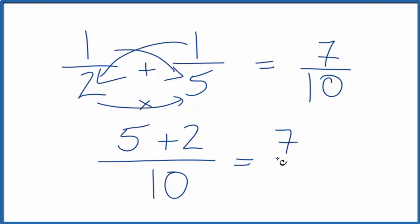Five plus two, that's seven over ten, and we get the same answer. So we did the first part correctly. This is the correct fraction for one-half plus one-fifth.